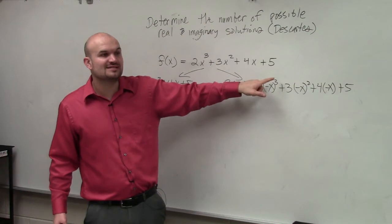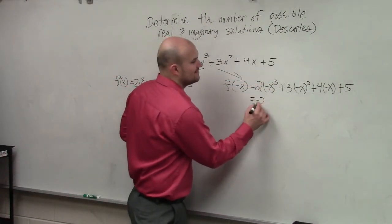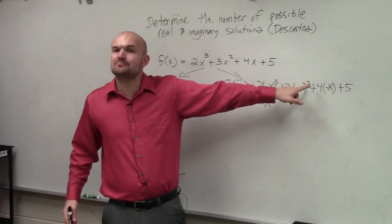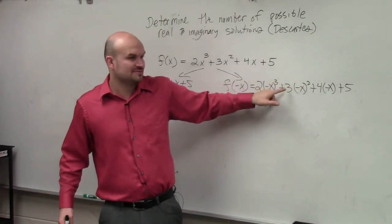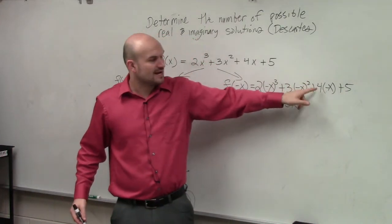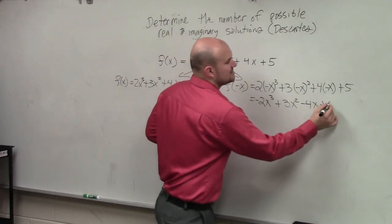So negative x cubed is negative x cubed times 2 is equal to a negative 2x cubed. Negative x squared is positive x squared times 3 is going to be a positive 3x squared. Negative x times 4 is negative 4x, and then plus 5.